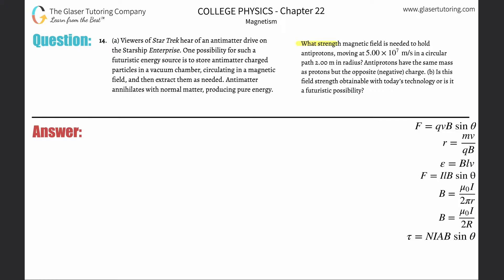Okay, what strength of a magnetic field is needed to hold antiprotons moving at 5 times 10 to the 7 meters per second in a circular path of 2 meters in radius? Antiprotons have the same mass as a proton but opposite or a negative charge.